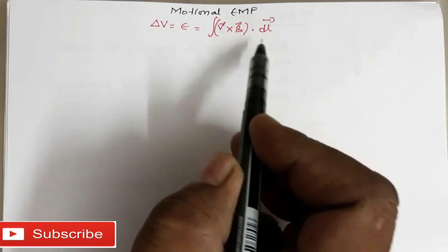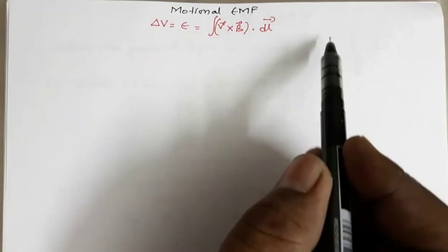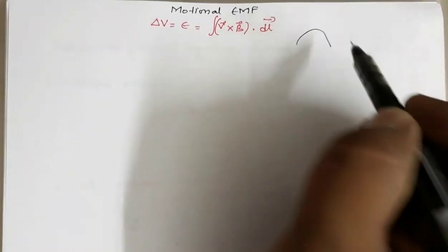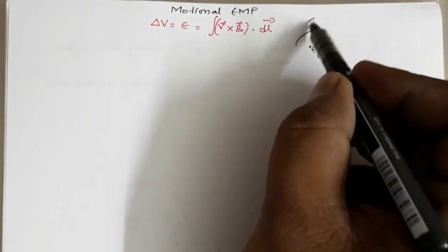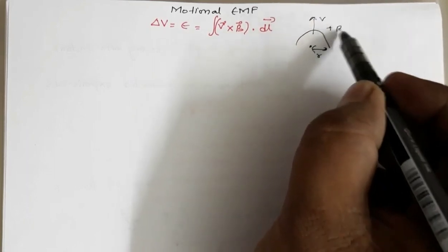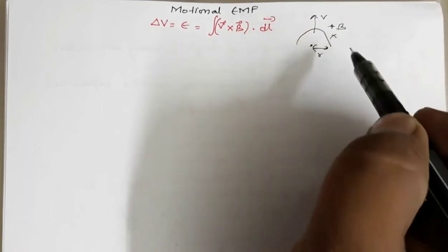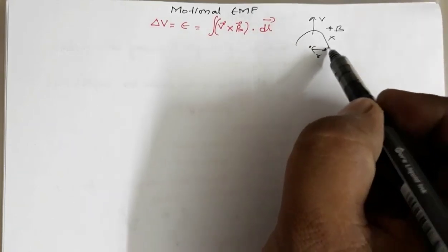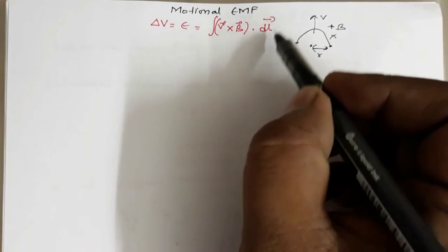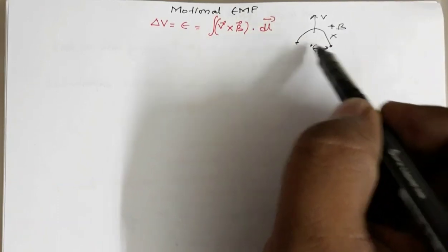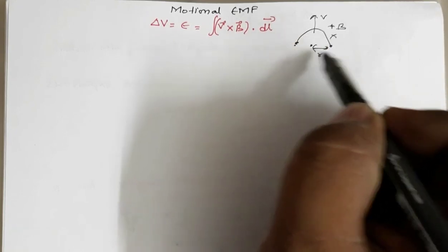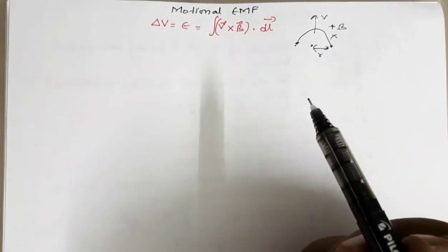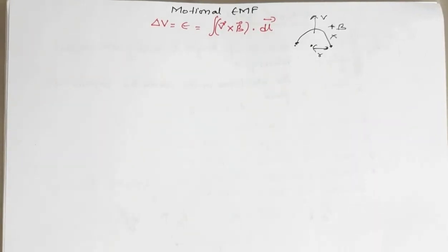And this dL is a vector. So that means if we have a conductor of some shape, like a semi-circle with radius R, and this conductor is moving in this direction with velocity V perpendicular to the magnetic field — the magnetic field is directed inward — since dL is a vector quantity, you need to take the length from the initial position to the final position, the shortest length. So in this case the length will not be pi R, but it will be twice R.